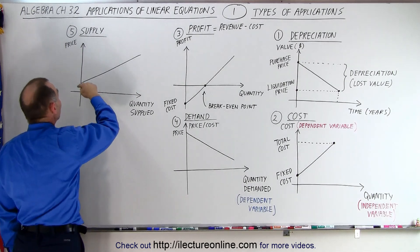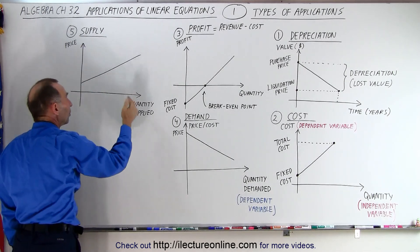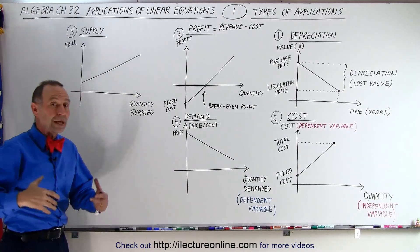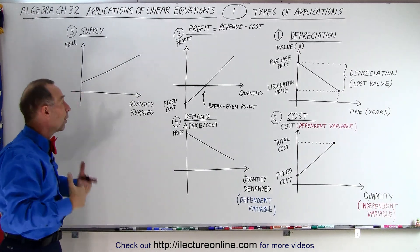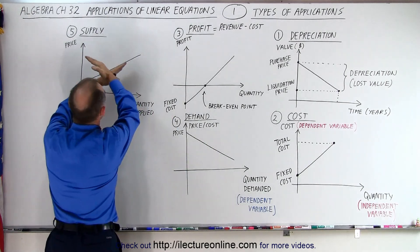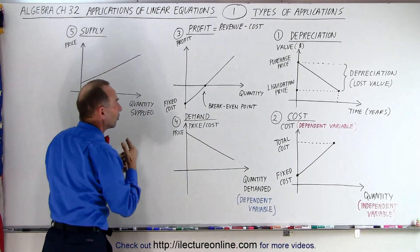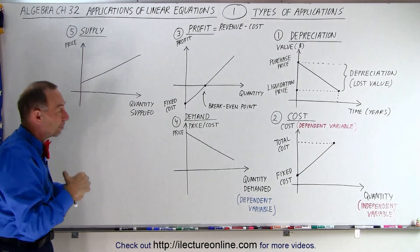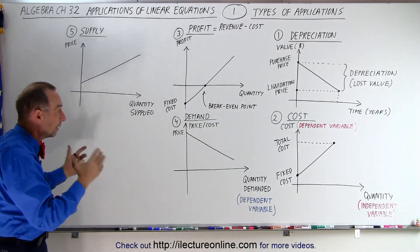Then as the price that you can get for it goes up, the supply goes up as well. When you can make more money off of something, more people will want to produce it. And so notice that eventually these two graphs will be on top of each other and there'll be a point where there's an equilibrium between the demand and the supply curve or demand and supply graph.